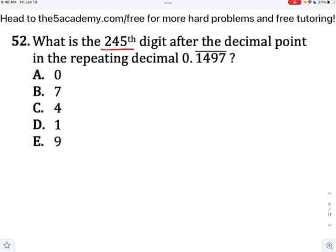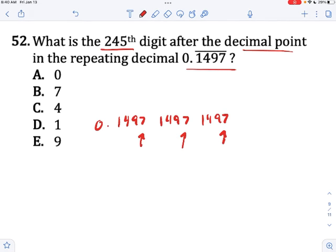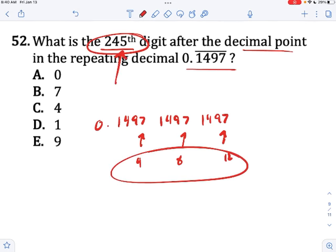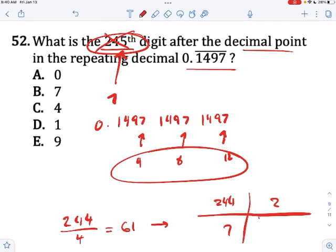What is the 245th digit after the decimal point in the repeating decimal here? So what we notice is that this decimal is going to look like this: 1497, 1497, 1497. And we see that every fourth digit is going to be a 7. The fourth, eighth, twelfth, sixteenth digits are all going to be 7. So if this number is just divisible by 4, just like these here, that means that this should be a 7. But it's not divisible by 4, unfortunately. But if we find a number right next to it that's divisible by 4, that means that we can track what those numbers will be. So 244, if you plug it into your calculator, is divisible by 4. It gives you 61. That means that the 244th digit is going to be a 7. So the 245th digit would just be whatever shows up right after the 7 typically, and that's a 1.